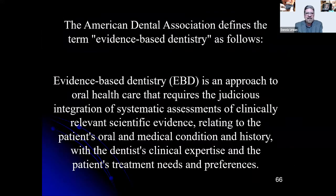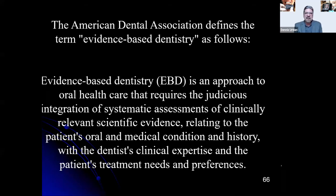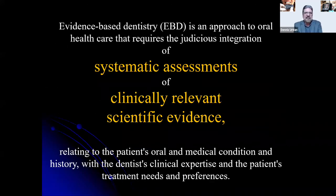We see things differently — breaking complex information into sections makes it easier to understand. The same applies to shade taking: the Vita Classical shade guide was built on a value-based system rather than addressing value, hue, and chroma together. It lacks uniformity and has no standardized method for measuring color. The current shade system's limitations include color gaps — shades not uniformly positioned throughout the tooth color space — and inaccurate interpolation, meaning no single discernible intermediate shade between tabs.